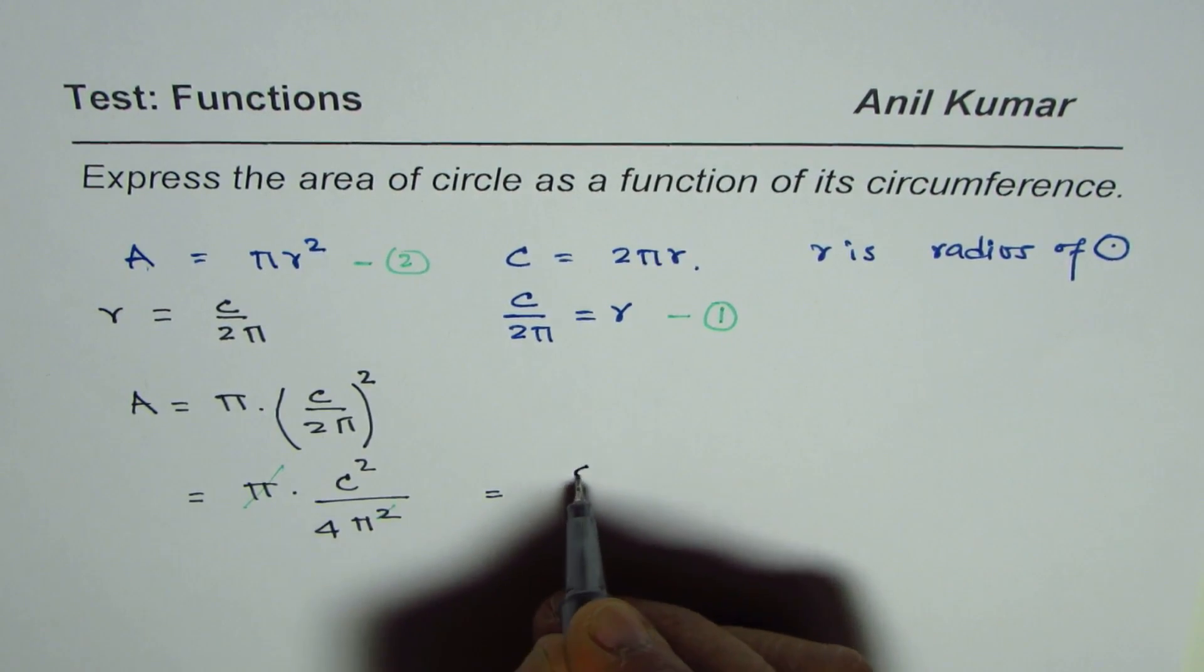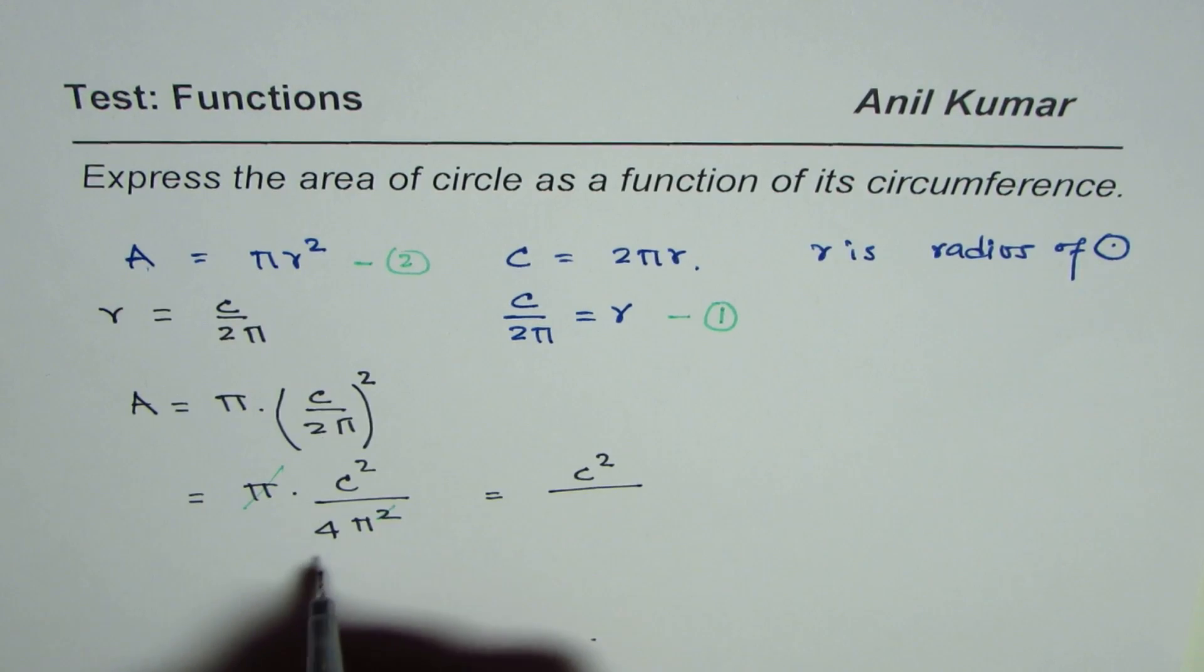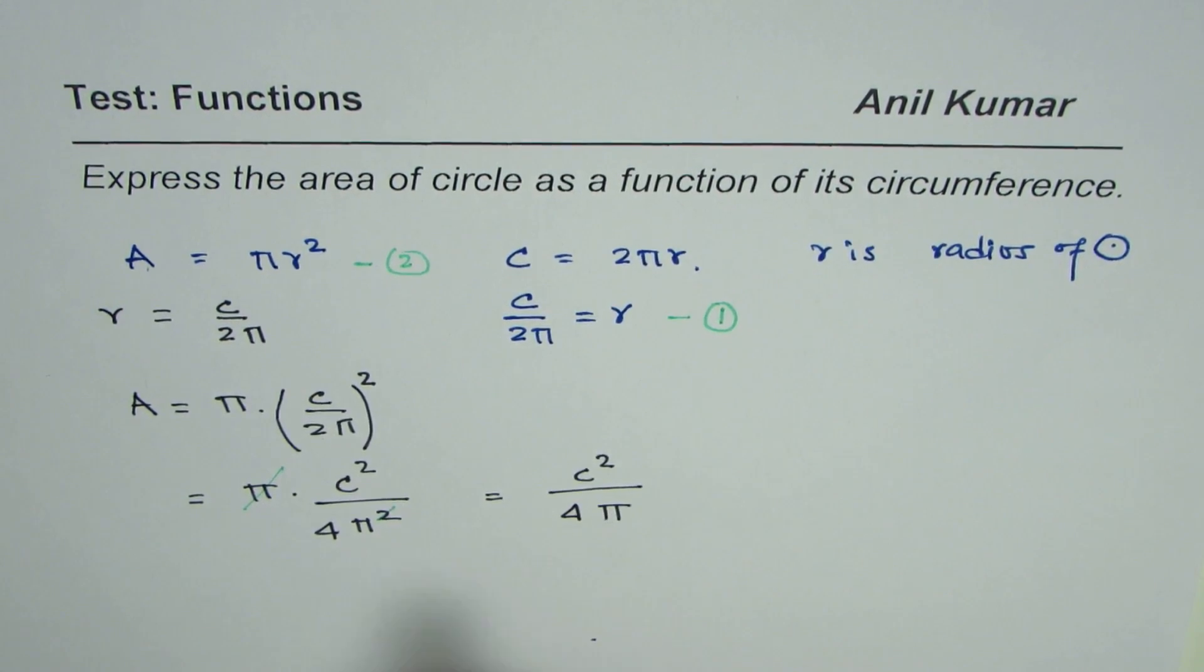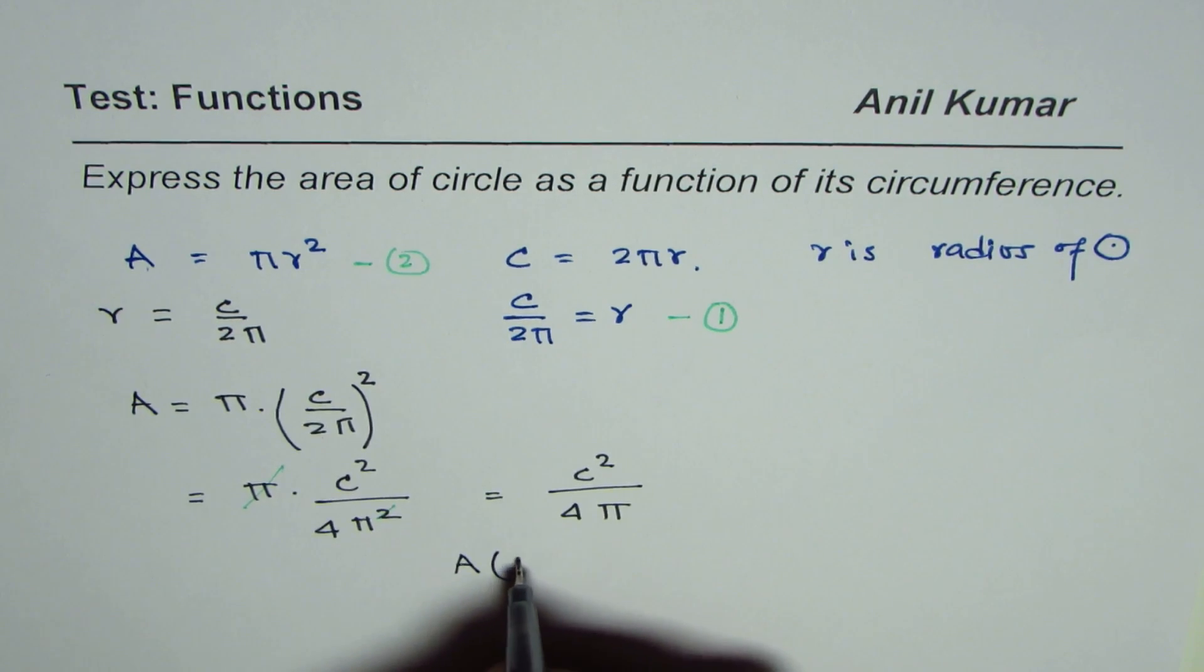Now in this, π is a constant, 4 is a constant, and area is in terms of circumference C. Therefore, we can write area as a function of circumference: A(C) equals C² over 4π, and that becomes our answer.